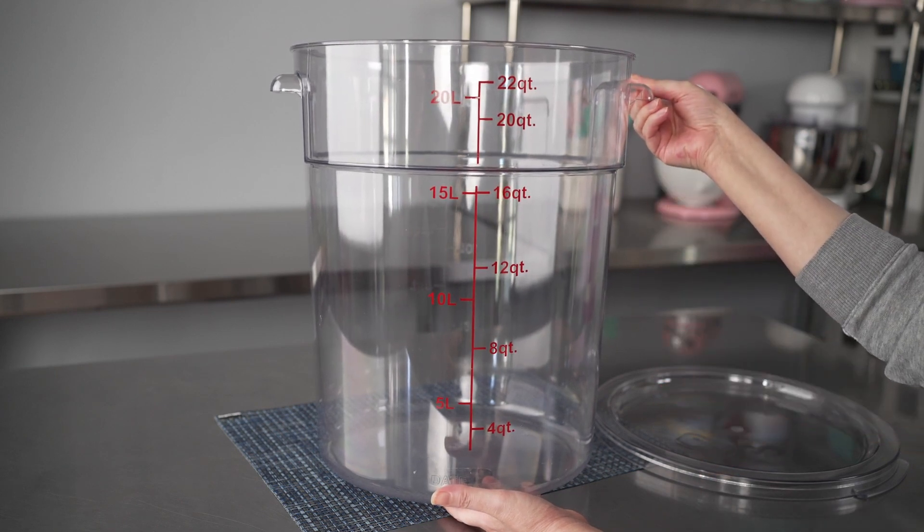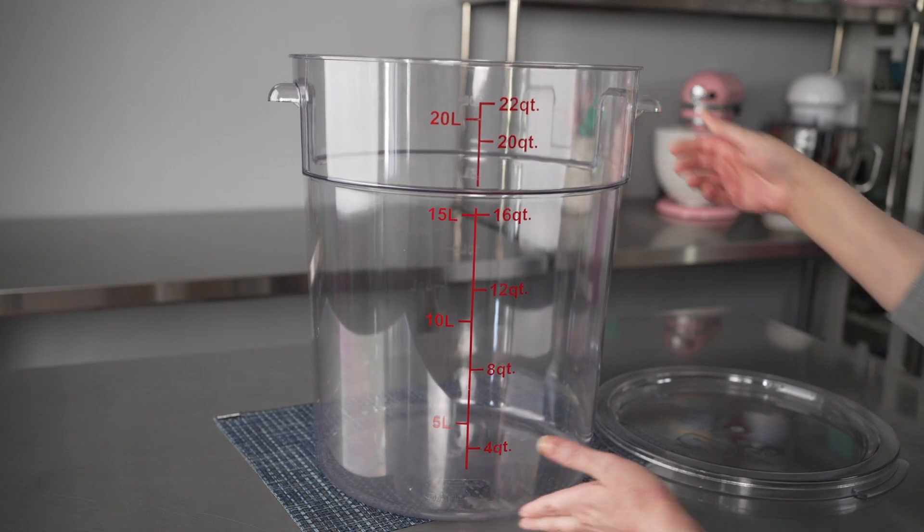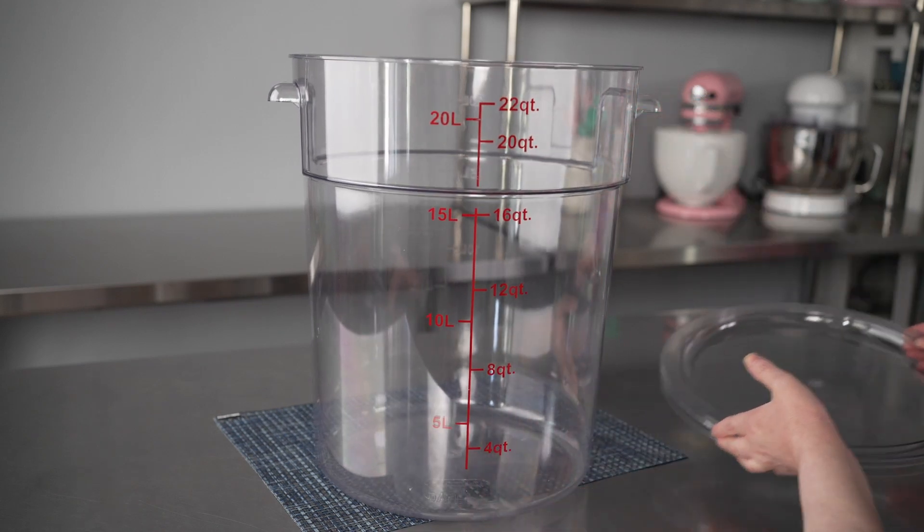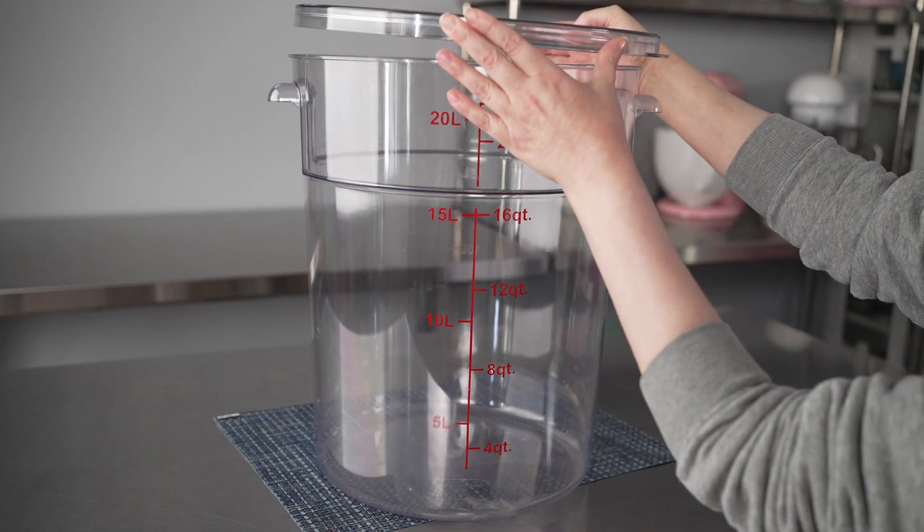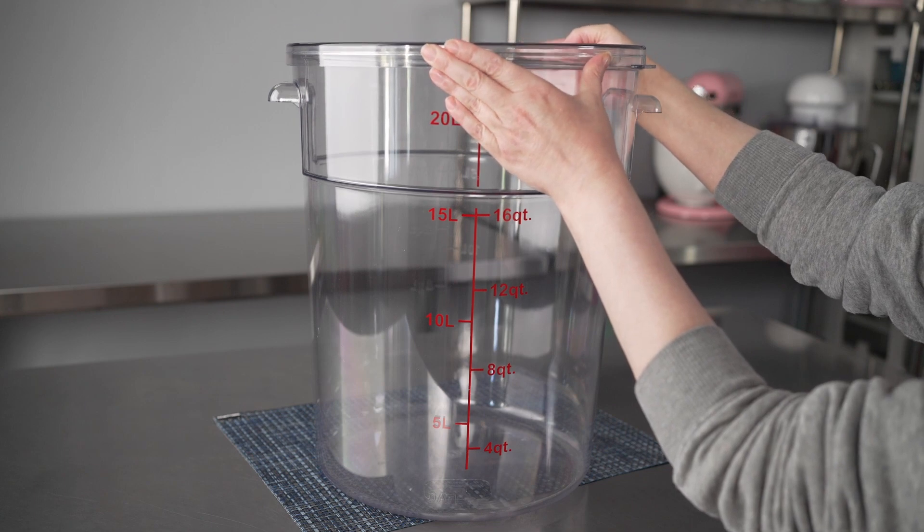They also come with these great built-in handles, and these containers, well, you can use them to store dry goods like we do. You can also use them for things like prepped recipes.